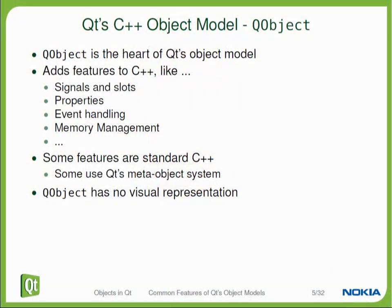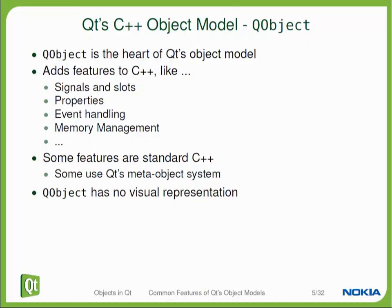The heart of the Qt object model is the QObject base class. Every class that uses signals and slots, dynamic properties, or the memory management provided by the Qt object model directly or indirectly inherits QObject. QObject adds all these features except the visual representation. So anything appearing on the screen in a GUI program inherits QWidget, which is a QObject and extends it with the visual representation.